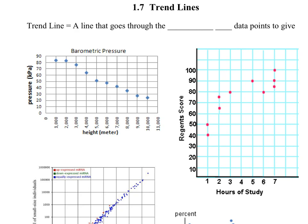This section expands a little bit more on those trend line things that we covered yesterday, so it's going to go pretty fast. A trend line is a line that goes through the middle of the data points to give an approximation of the data.